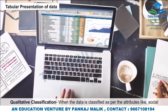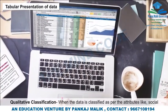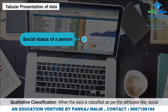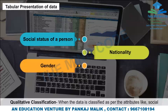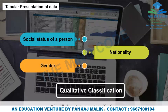Qualitative Classification: When the data is classified as per attributes like social status of a person, nationality, gender, etc., it is called qualitative classification.